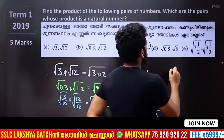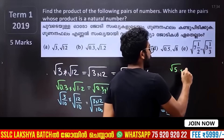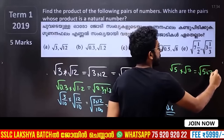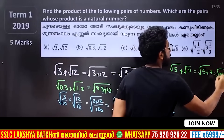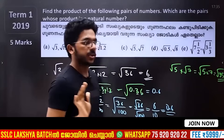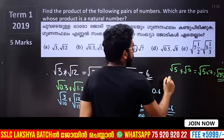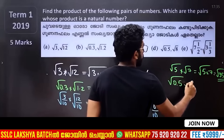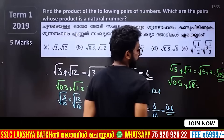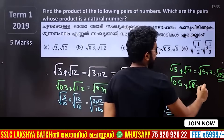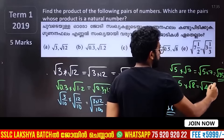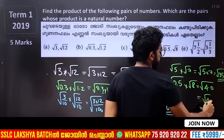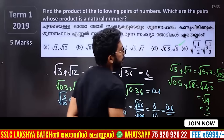Root 5 into root 7 is root 35 — that's not a natural number. Root 0.5 into root 8 — point 8 multiplied gives 4.0. That is root 4, which is 2. That's a natural number.